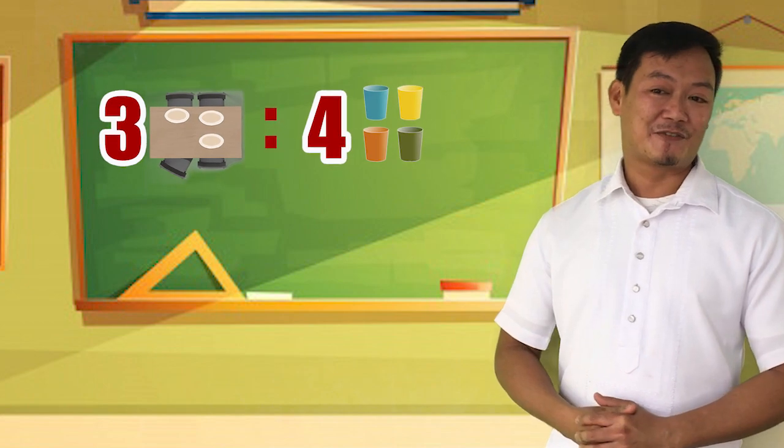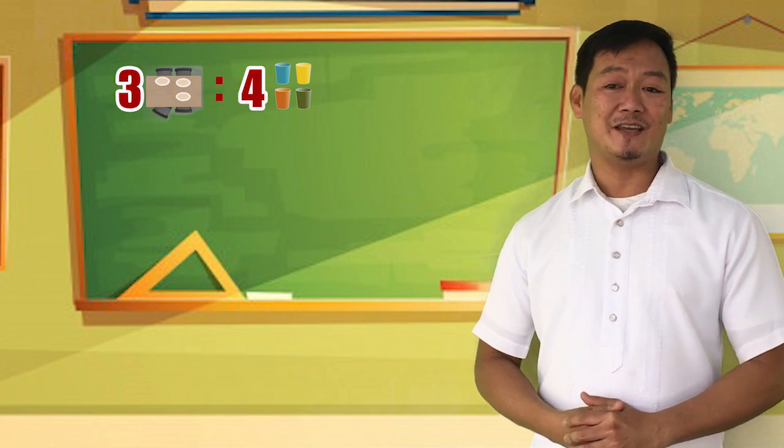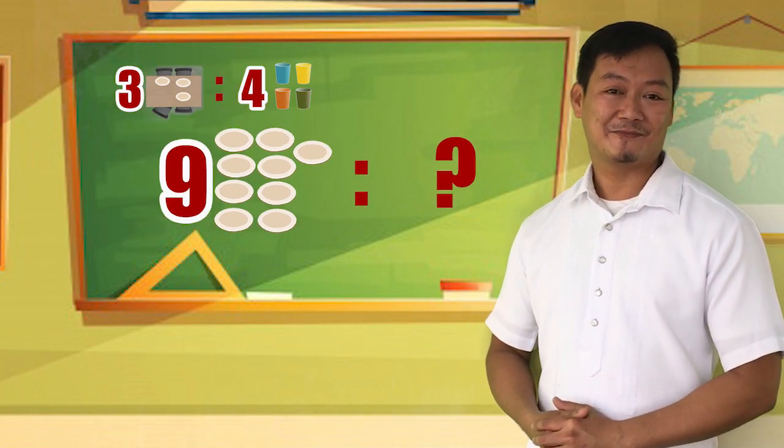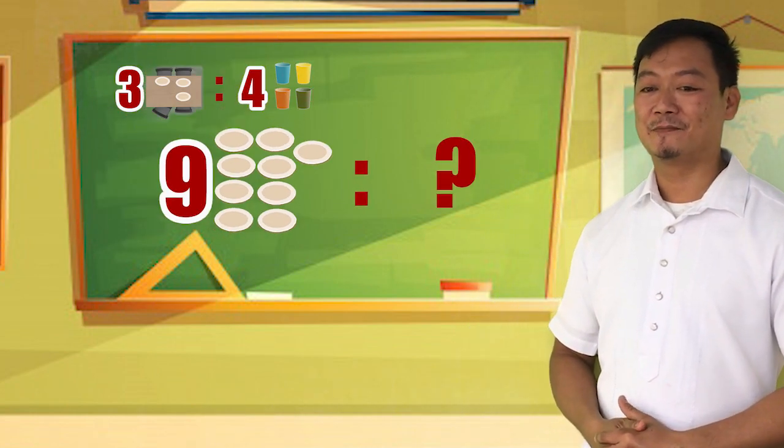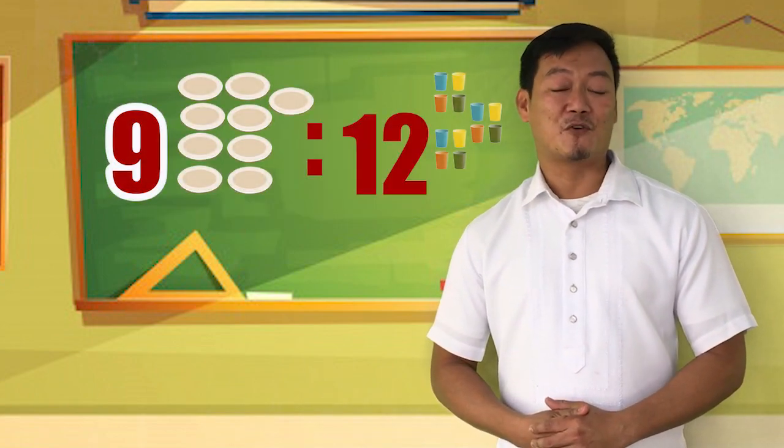If the ratio of the number of plates to the number of cups is three to four, how many cups do we need if there are nine plates? Very good. We need 12 cups for nine plates.